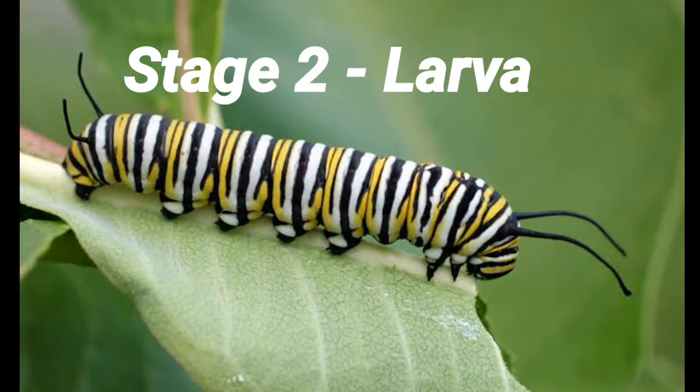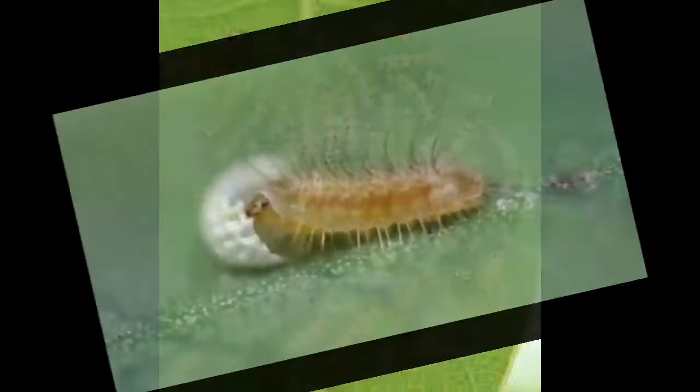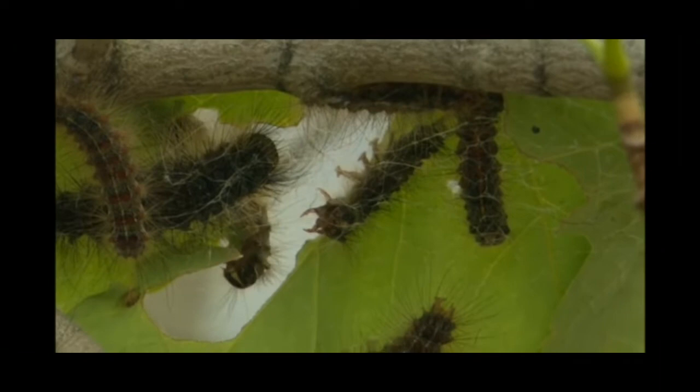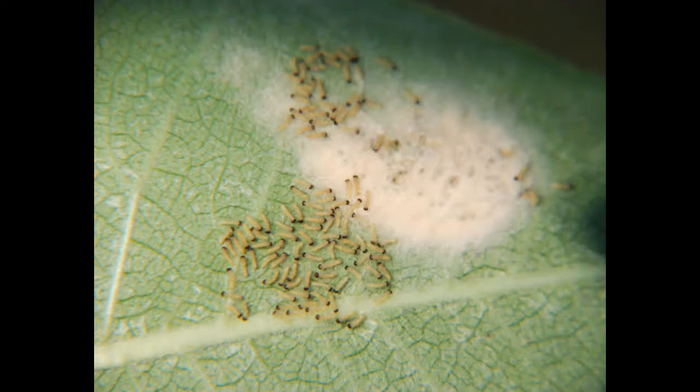Stage 2: Larva. Very tiny caterpillars hatch from the egg. The first meal for most caterpillars is the egg shell. Then the caterpillar starts eating the leaves of the milkweed plant on which it was laid. Here we can see a newly hatched caterpillar eating its own egg shell. This is really important because a mother butterfly needs to lay her eggs on a type of leaf the caterpillar will eat, since the very tiny caterpillar cannot go to a new plant — it needs to hatch on a kind of leaf it wants to eat.